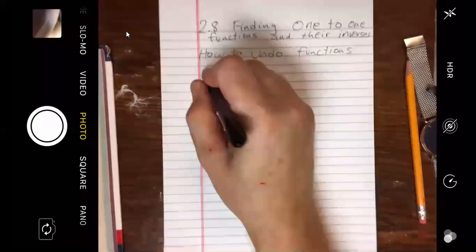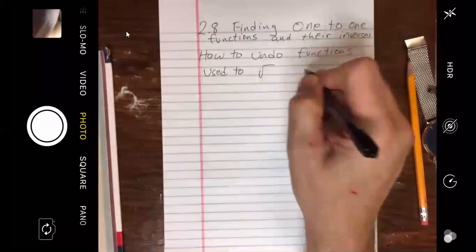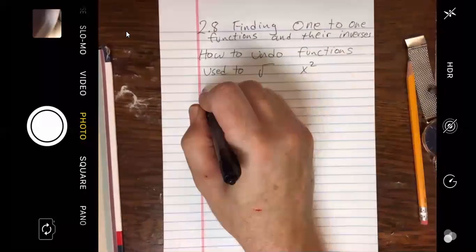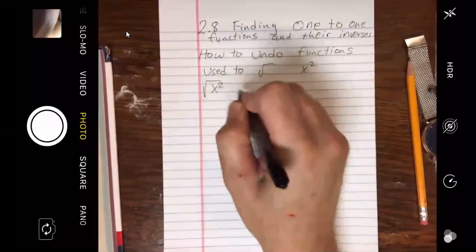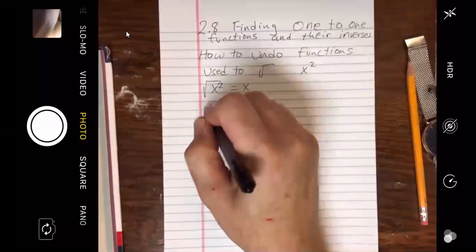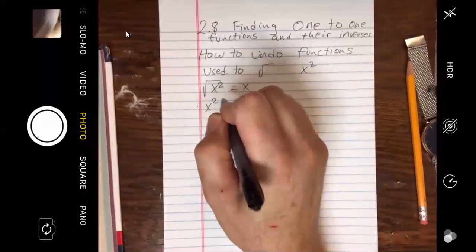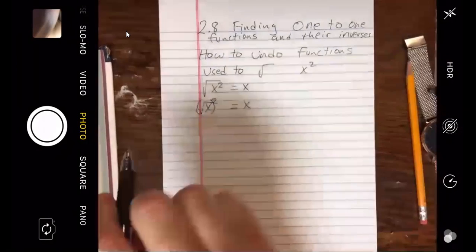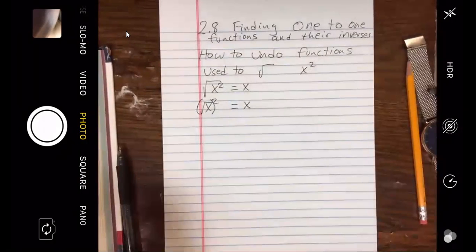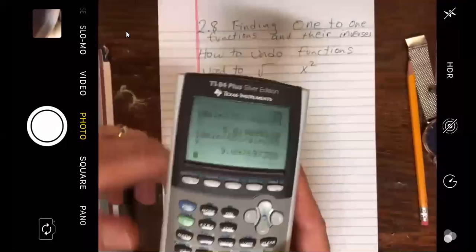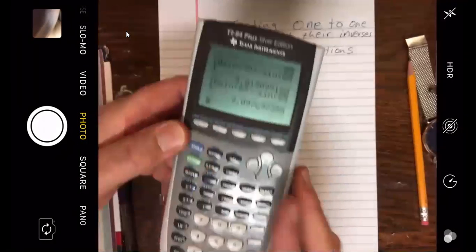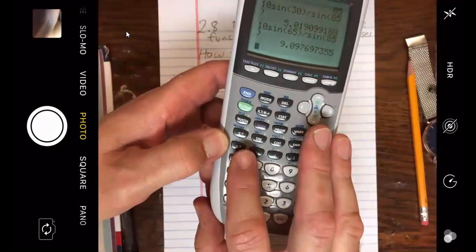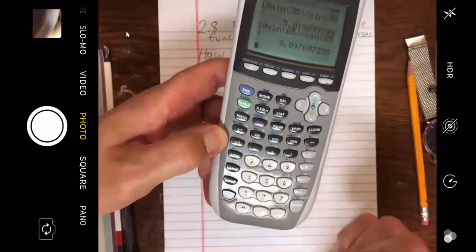This is basically about how to undo functions. Now, you're probably used to square root and x squared. Probably everybody knows that the square root of x squared is equal to x. And notice on your calculator, square root and x squared are off the same key. They're paired.